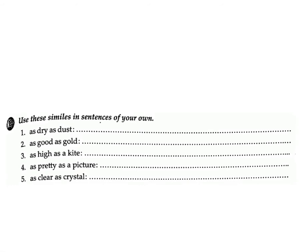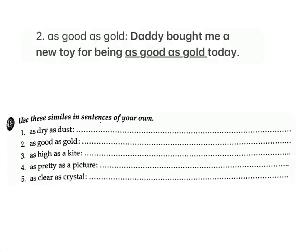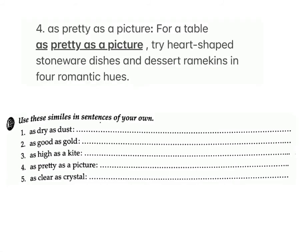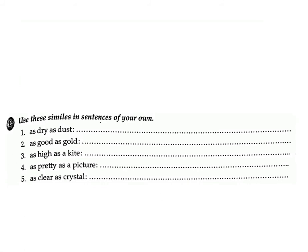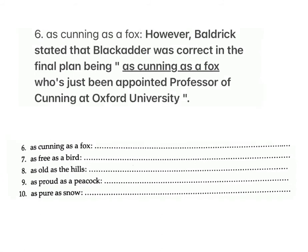Exercise E: Use these similes in sentences of your own. 1. As dry as dust — The flourless chocolate cake was as dry as dust. 2. As good as gold — Daddy bought me a new toy for being as good as gold today. 3. As high as a kite — I tried to talk to her after the party but she was as high as a kite. 4. As pretty as a picture — For a table as pretty as a picture, try heart-shaped stoneware dishes. 5. As clear as crystal — Its color is pale golden yellow and displays a very light amber glint.